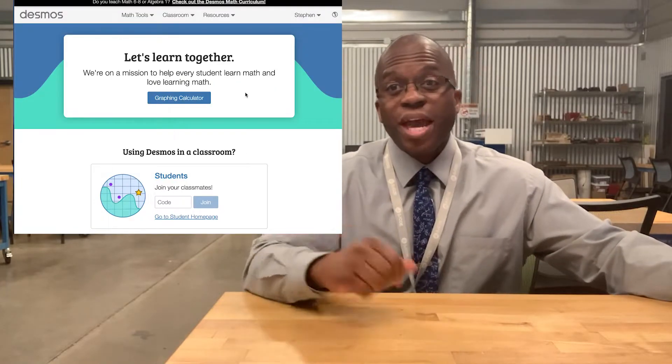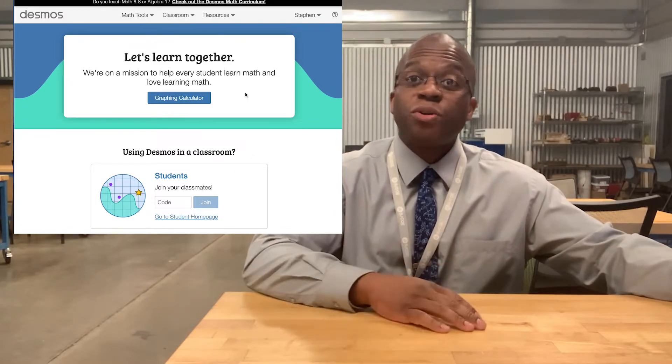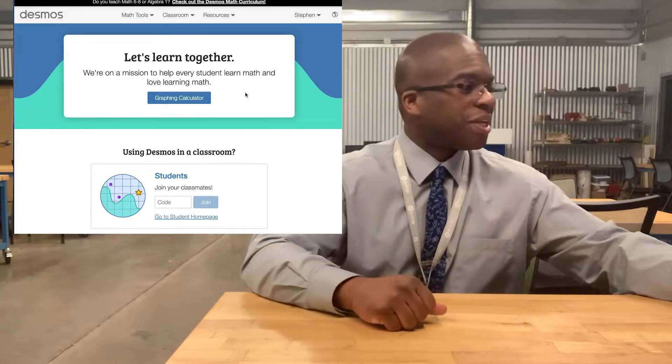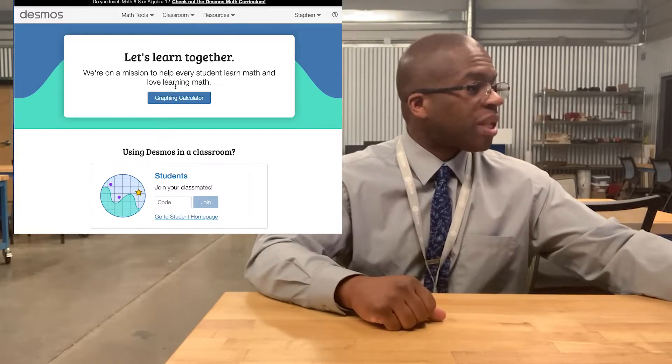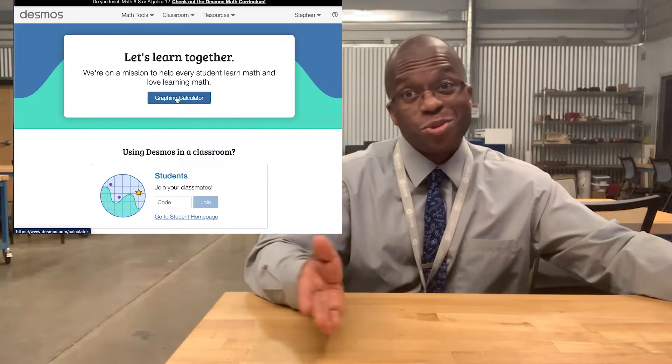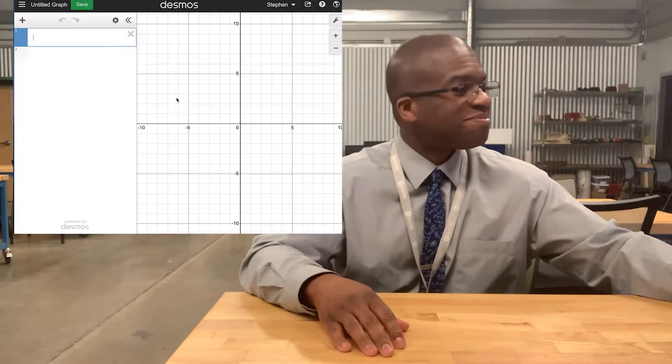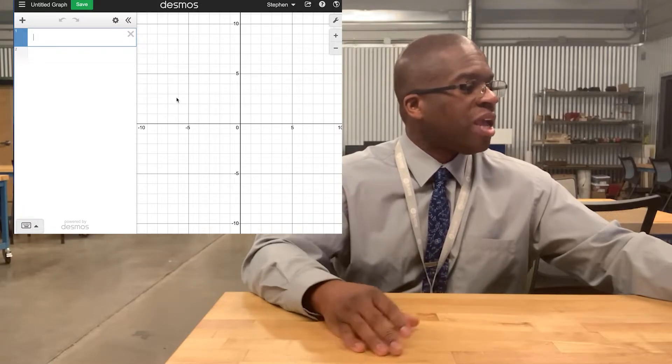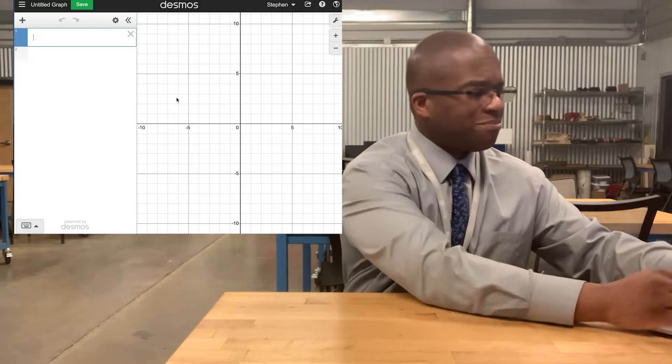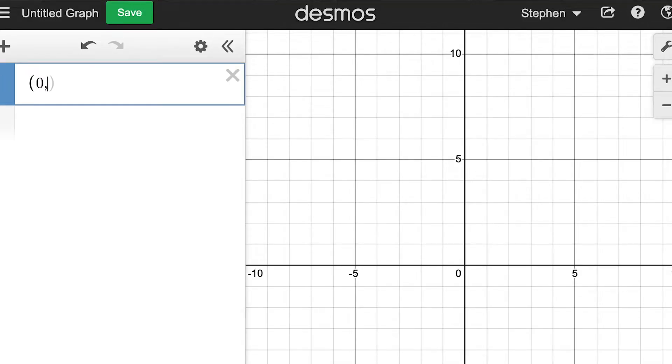So here we have Desmos. It is a really powerful online graphing calculator. Let's get to the basics quickly. I'm going to click here on graphing calculator. By the way, you can get to Desmos at Desmos.com. All right, the simplest thing that I can do on Desmos is to just type in a point. Let's go with the origin.